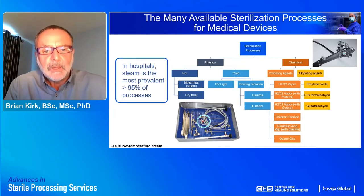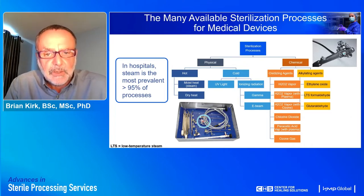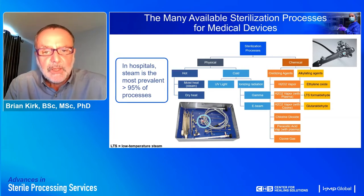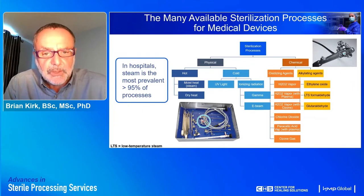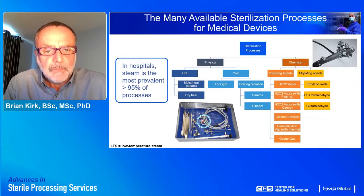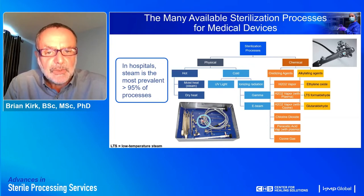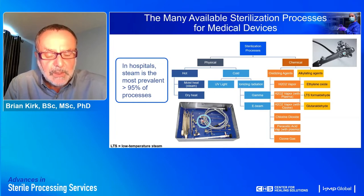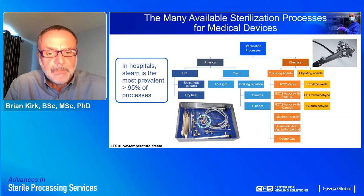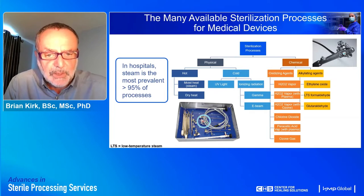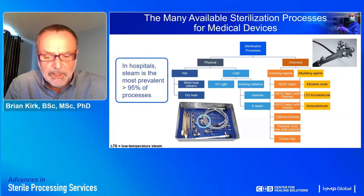We also have chemical microbicidal agents, including the alkylating agents — ethylene oxide, low temperature steam with formaldehyde, and glutaraldehyde — and the more modern oxidizing agents, which include hydrogen peroxide vapor sterilization processes with and without plasma and incorporation of other microbicidal agents. More esoteric agents include chlorine dioxide, peracetic acid vapor, and ozone gas.